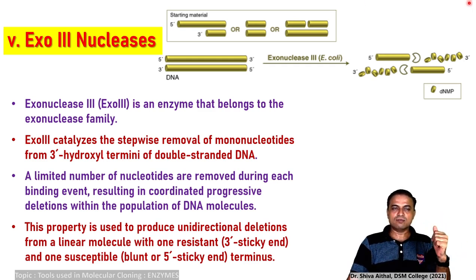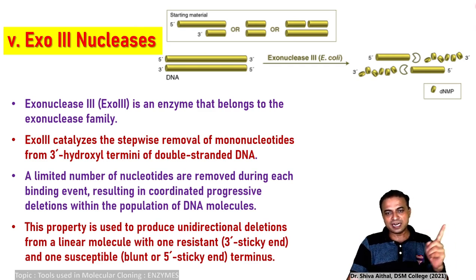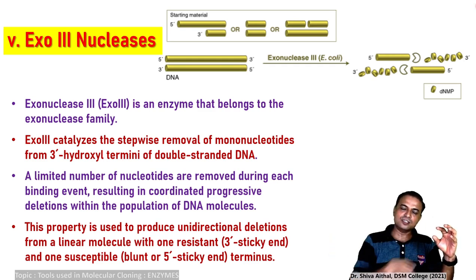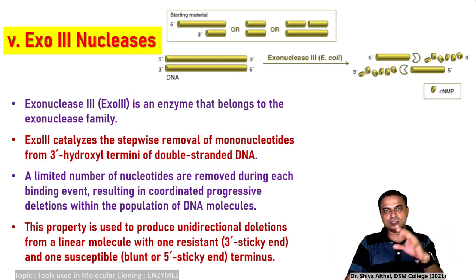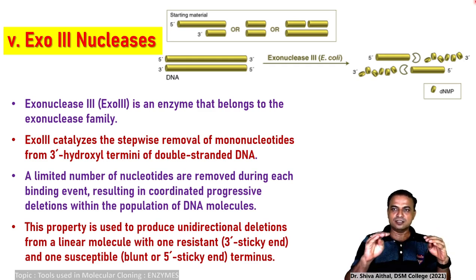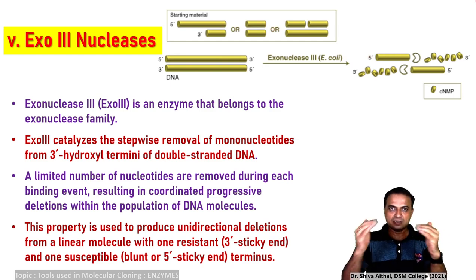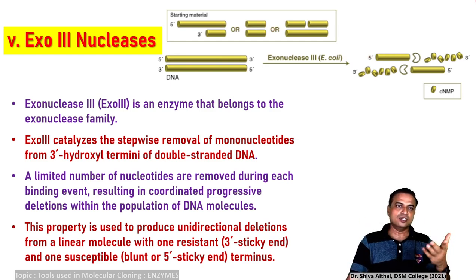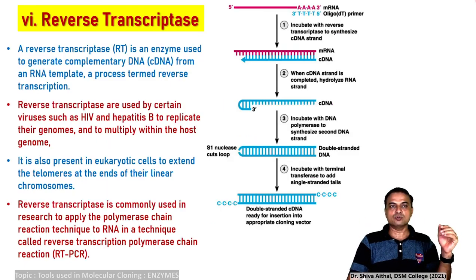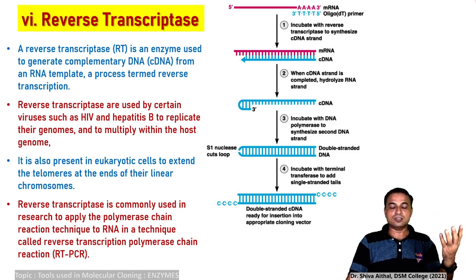The function of Exo 3 nuclease is used to produce a unidirectional deletion from a linear molecule — one-sided deletions. It generates either one sticky end and one blunt end, or one single-stranded sticky end DNA. It is a very important enzyme used in recombinant DNA technology.